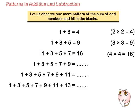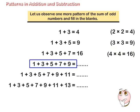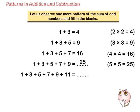1 plus 3 plus 5 plus 7 is equal to 16. In this case, first four odd numbers are added. Hence, 1 plus 3 plus 5 plus 7 plus 9 is equal to 5 multiplied by 5, which is equal to 25.